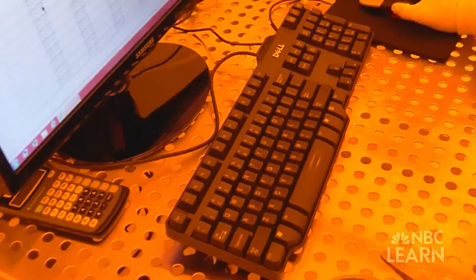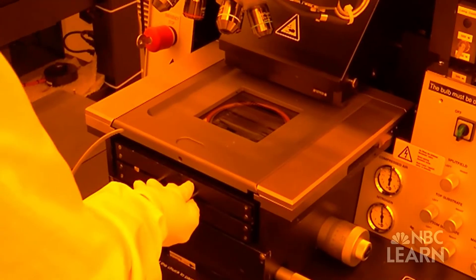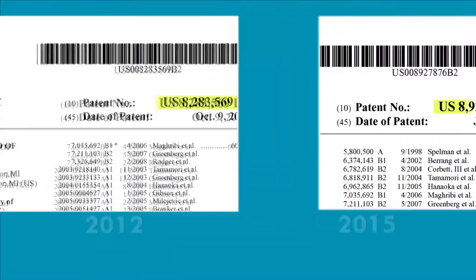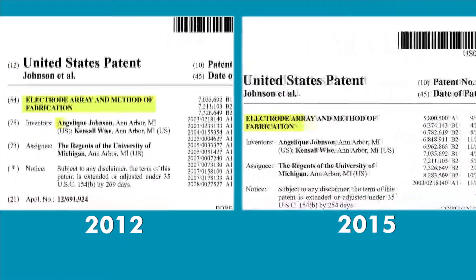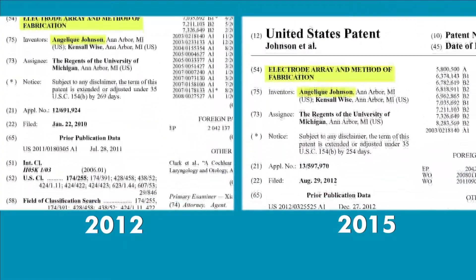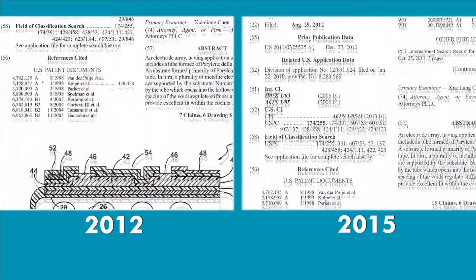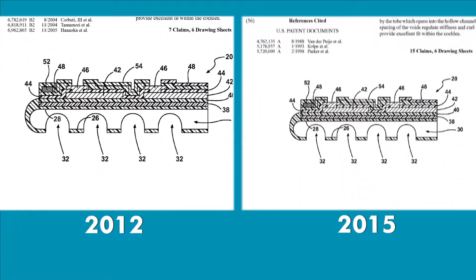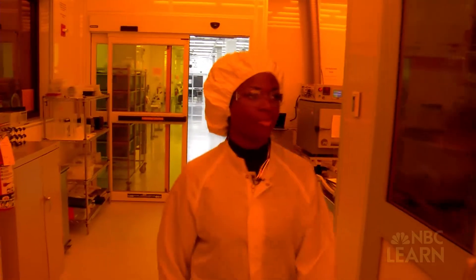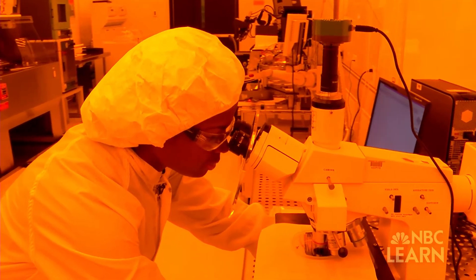Memstem is one of the first companies to manufacture a cochlear implant electrode array to this extent using microfabrication. In 2012 and 2015, Johnson was granted patents from the U.S. Patent and Trademark Office for her electrode arrays and automated microfabrication process.